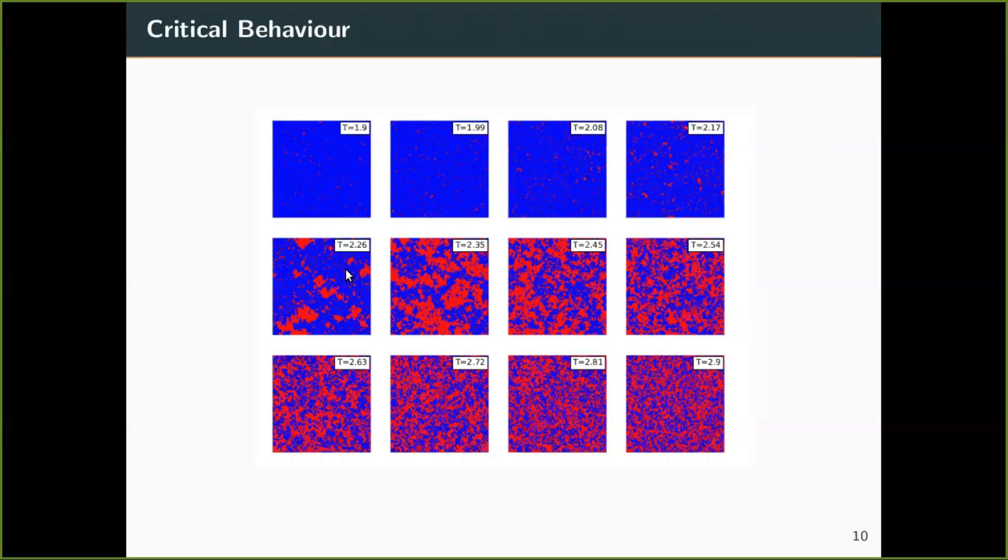Till 2.26 temperature which is below the critical temperature you see much more blue portion that is more spin up states rather than spin down states. Now each connected red dot here you see is basically a cluster.